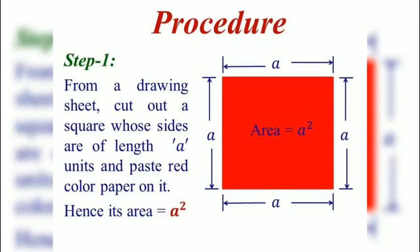Procedure: Step one — from a drawing sheet, cut out a square whose sides are of length A units and paste red color paper on it. This is a square having side A units, and its area is A square units.